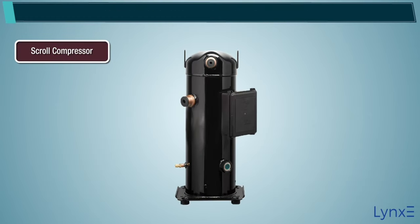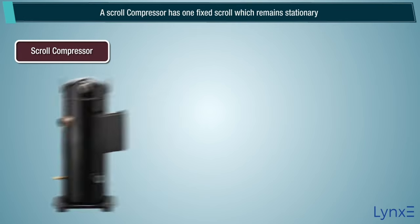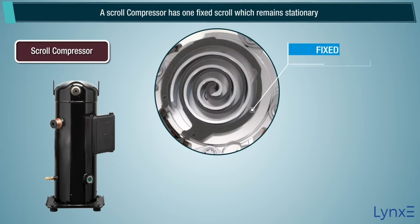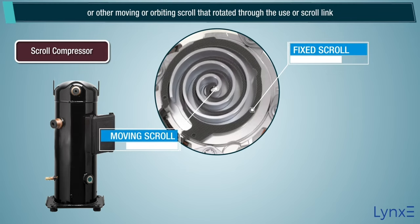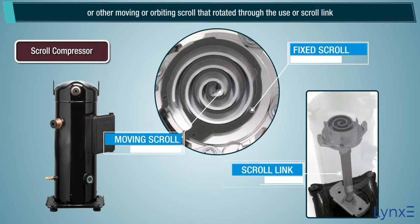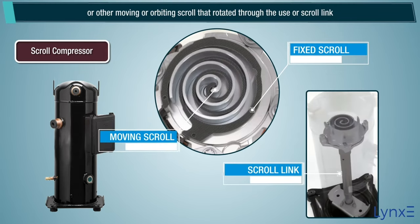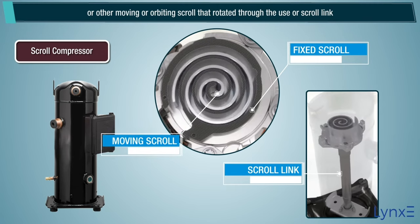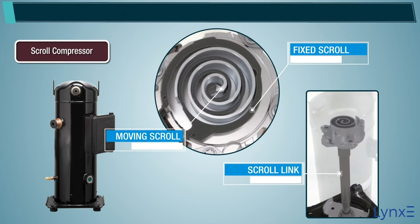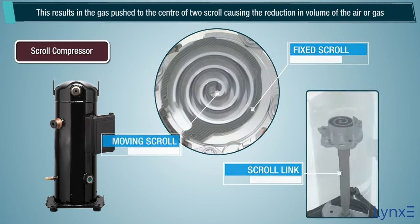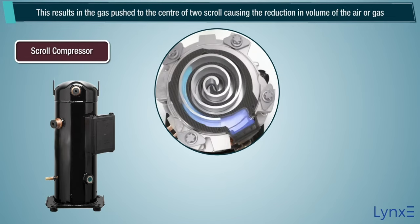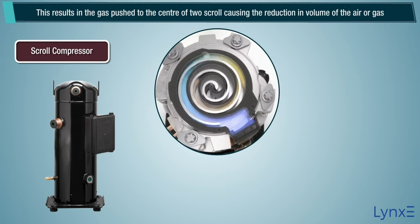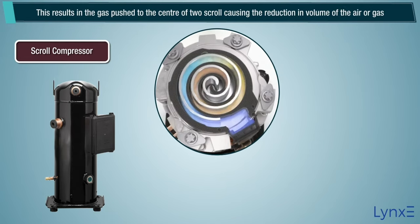A scroll compressor has one fixed scroll which remains stationary and another moving or orbiting scroll that rotates through the use of a scroll link. This results in the gas being pushed to the center of the two scrolls, causing a reduction in the volume of the air or gas.